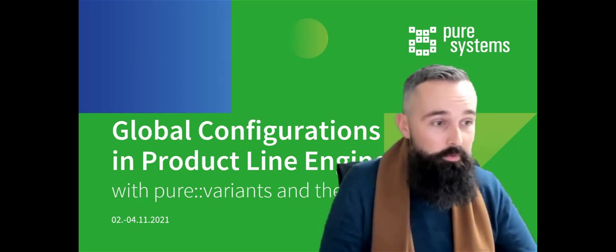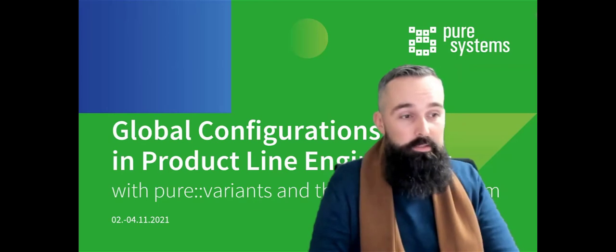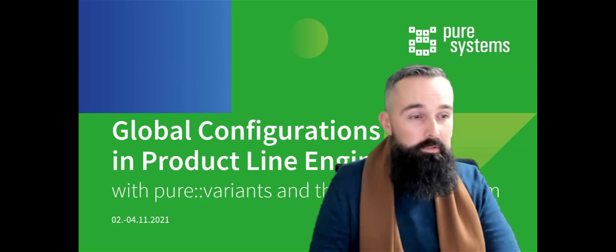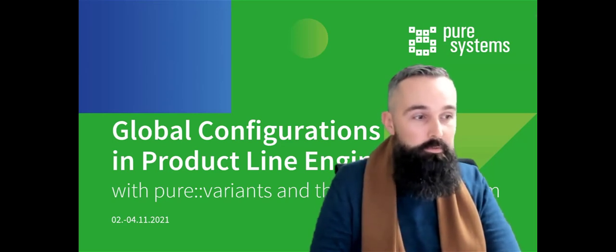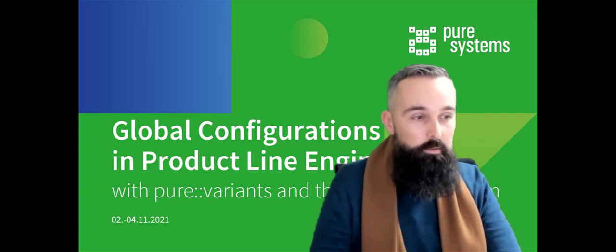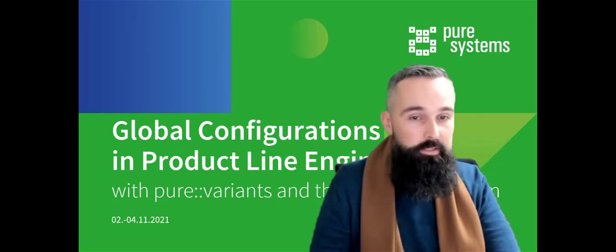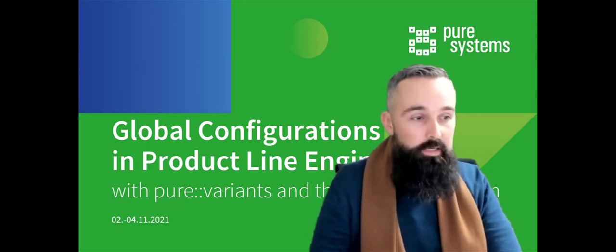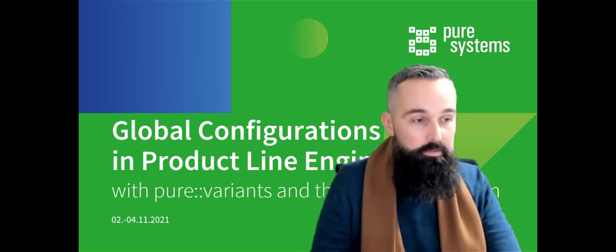Pure Systems has been on the market since 2001. We are headquartered in Markdorf, Germany, and operating worldwide, fully focused on the topic of systematic reuse of engineering assets according to the product line engineering approach. Our customers mainly stem from industries developing complex systems consisting of hardware and software, like automotive, aerospace, defense, and rail and transportation.